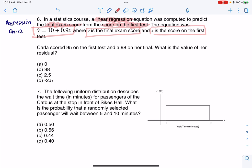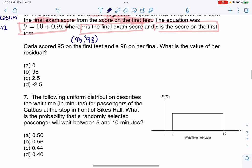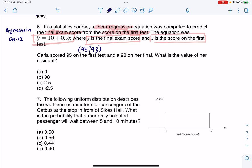So Carla scored 95 on the first test and 98 on her final. So I'm just going to write that as an ordered pair. So she was 95 and then 98, right? Let me shrink that a bit. This was X comma Y. So she got 95 on her first test, 98 on her final.